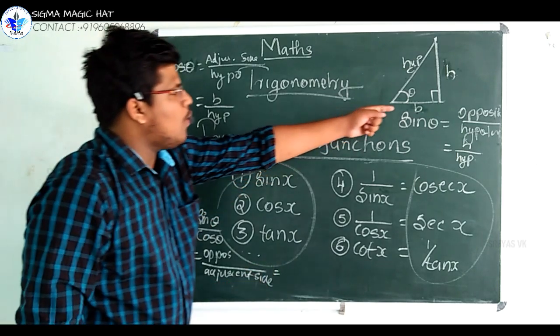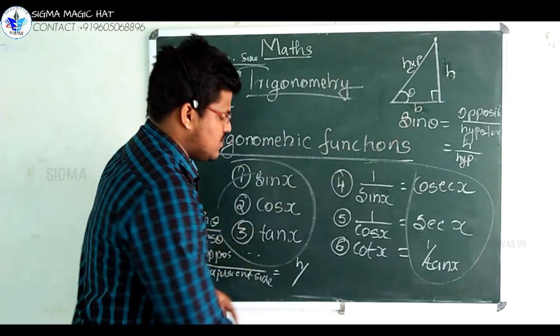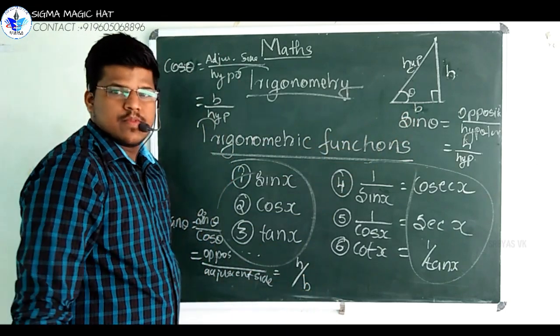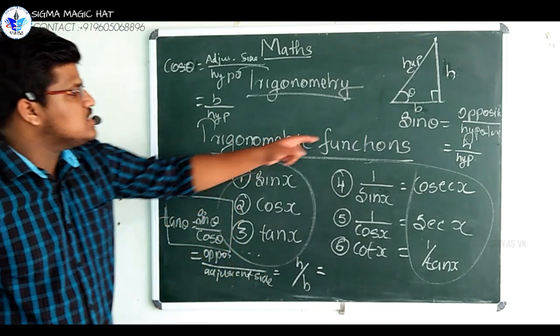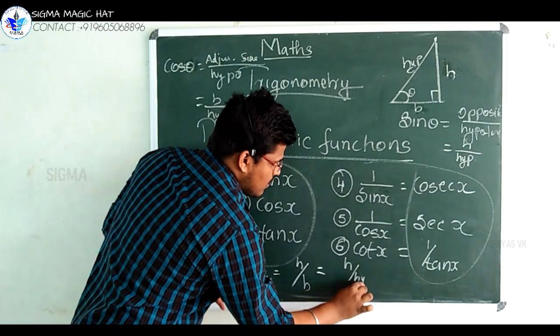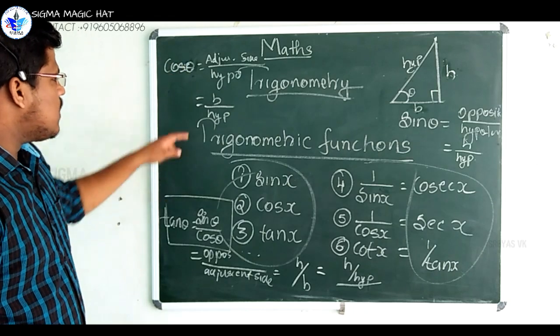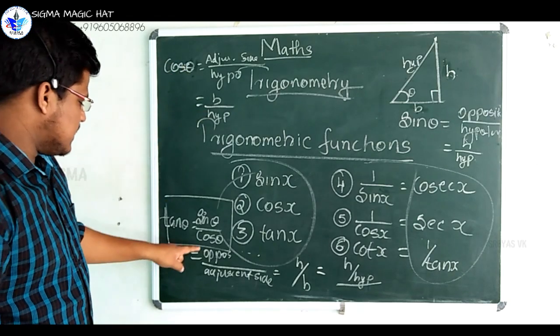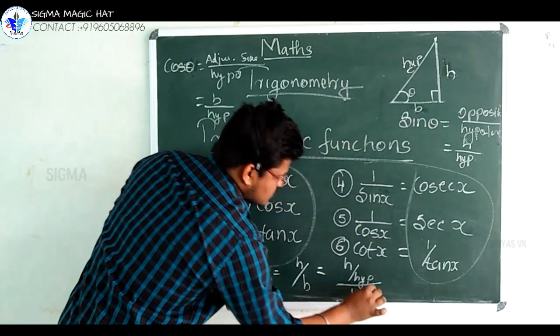So here, opposite side is H and adjacent side is B. Or we can find, according to this formula, we know sin theta is equal to H by hypotenuse, and cos theta is equal to B by hypotenuse.